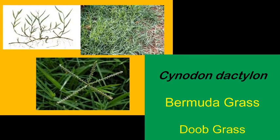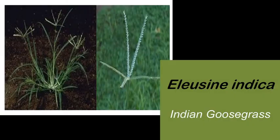The next plant is doob grass or Bermuda grass. It is a very important grass that we see in our surroundings daily. It treats acidity, increases immunity, and purifies blood. It is also helpful in the cure of polycystic ovarian syndrome, reduces obesity and constipation, and is an important constituent of Ayurvedic medicines.